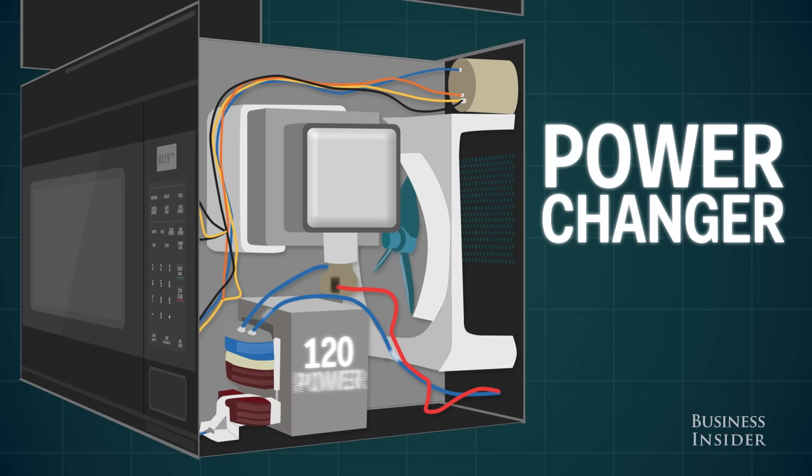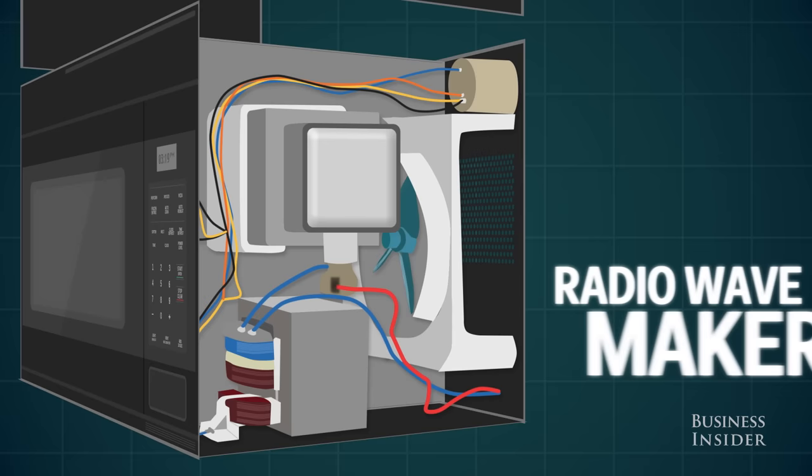It starts with the power changer, which turns the power from the wall into a kind of power that's better for making radio waves.